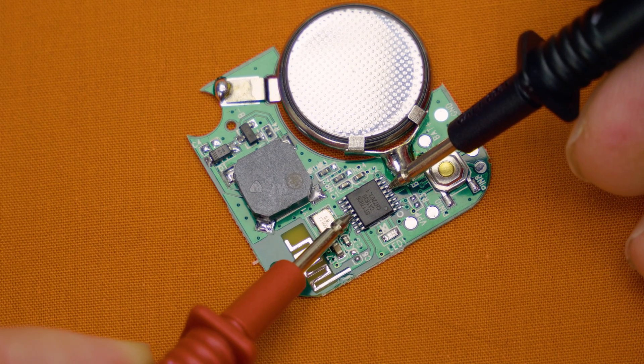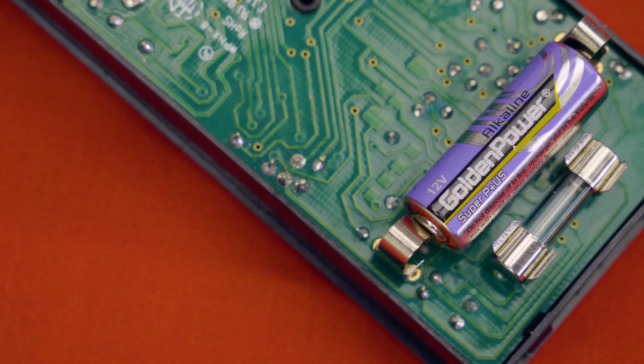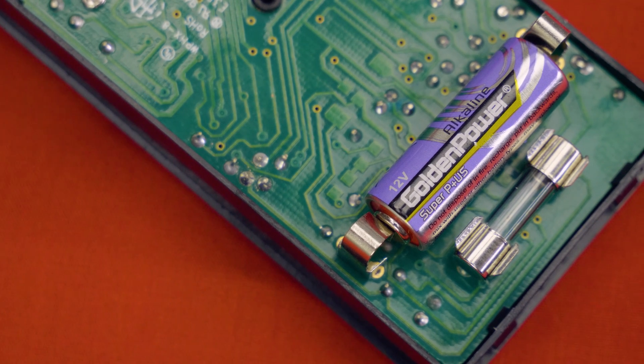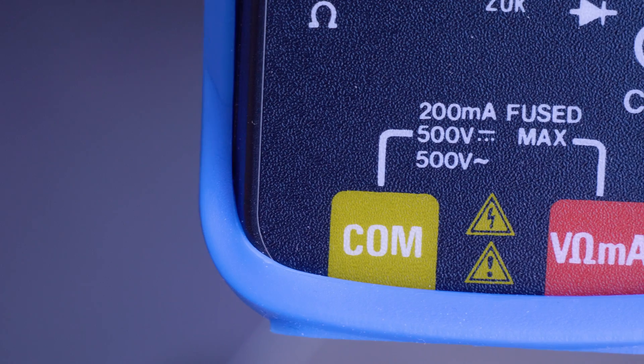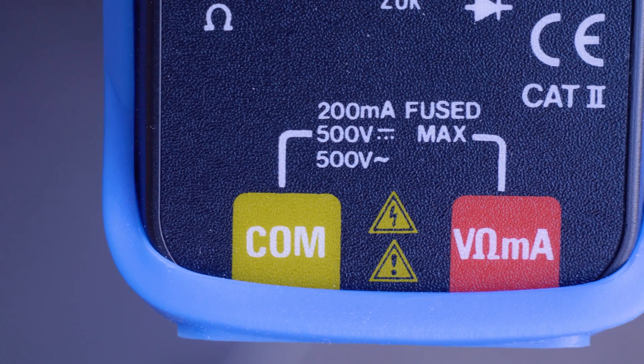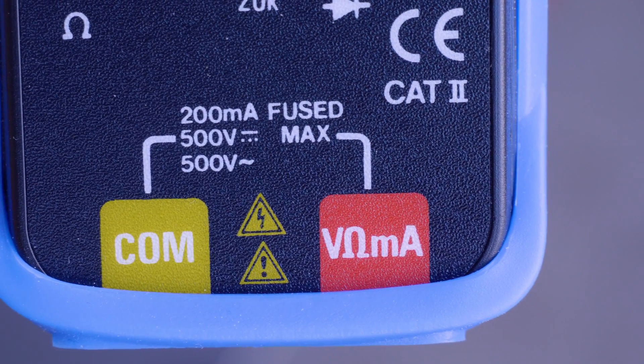Inside this guy we have a fuse rated for 500 volts or 200 milliamps. Also in there we find ourselves our 9 volt battery. This guy's also a category 2 rated device and has a million warning labels as I have already mentioned.